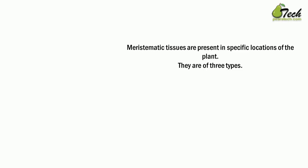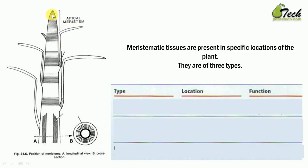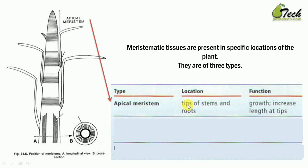Meristematic tissues are present in specific locations of the plant, and there are three types. Looking at a typical plant, it grows from its nodes, from its tip, and also increases its girth — the diameter of the tree grows too. The first type is apical meristem, found at the top of the plant — at the tips of stems and roots — and it increases length at the tips.